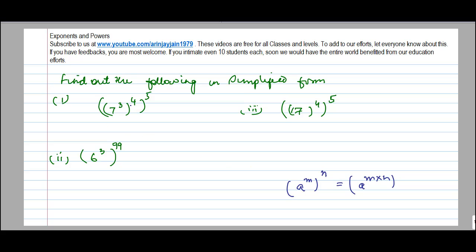Now in this what I have is I have three powers, so I solve them one by one. So let's say 7 to the power 3 to the power 4 is equal to 7 to the power 3 into 4 is equal to 7 to the power 12.